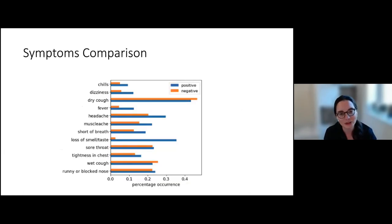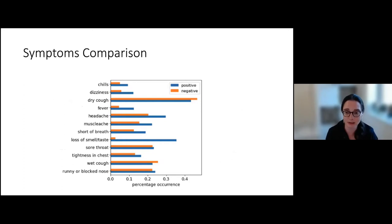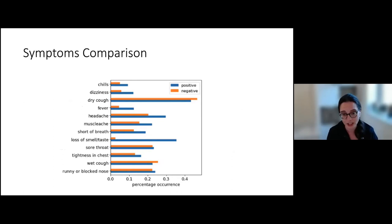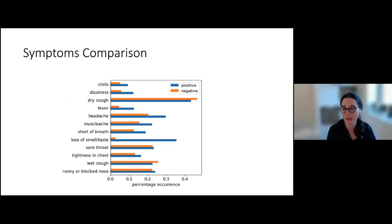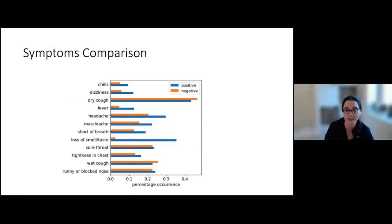One thing I find useful is the distribution of symptoms reported among those who tested negative versus positive. Loss of smell and taste is a good indicator, but if you look at dry cough, wet cough, runny nose, and sore throat, the numbers are fairly similar between positive and negative groups. This suggests that symptoms alone might not be enough as an indication — and we know that's true.